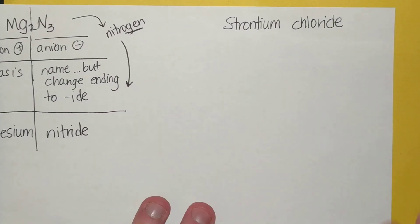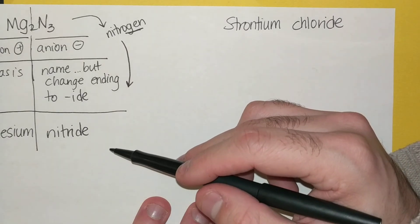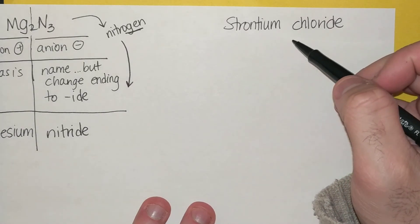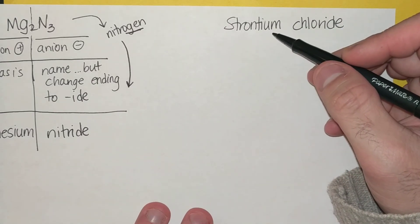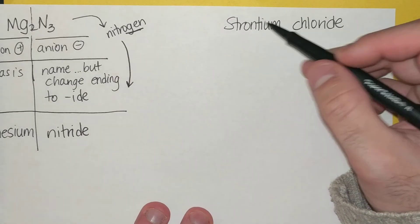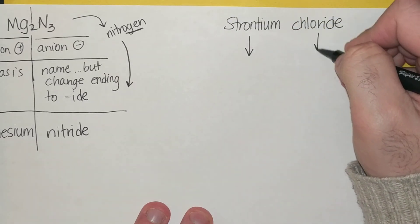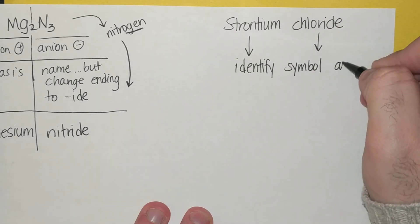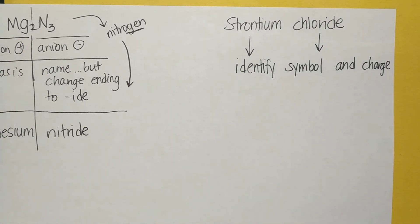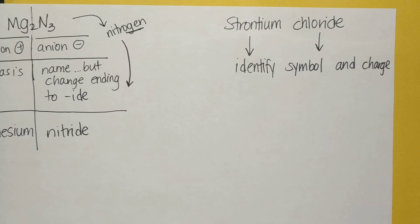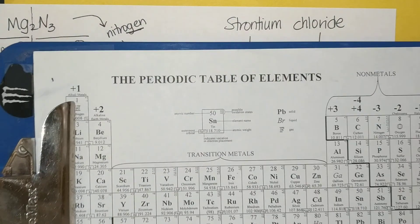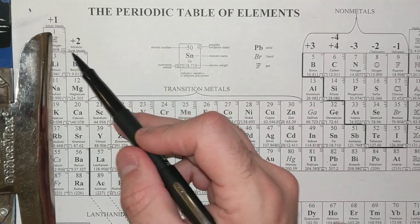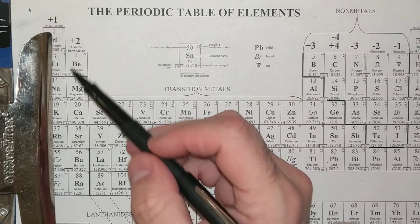Now if I want to do the opposite of this and write the formula from the name, I have to go a bit backwards and realize where these symbols, elements, and charges come from. So let's say I want to figure out the formula for strontium chloride. What I want to do is first identify the symbol and charge. If I look at a periodic table, I look for the names strontium and chloride. The periodic tables you have tell you at the very top what the charges of these elements will be in that group. So strontium is found in group two.